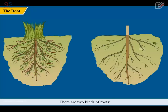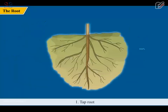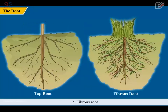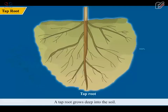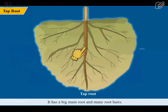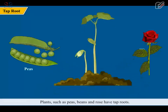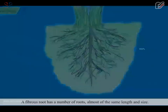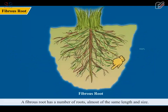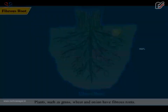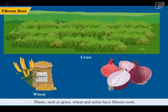There are two kinds of roots: taproot and fibrous root. A taproot grows deep into the soil. It has a big main root and many root hairs. Plants such as peas, beans and rose have taproots. A fibrous root has a number of roots almost of the same length and size. Plants such as grass, wheat and onion have fibrous roots.